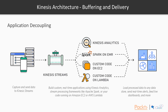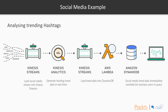Kinesis acts as a scalable buffer until your consumer can catch up — you can produce data as fast as you like and consume at your leisure. Kinesis has a built-in retention feature that can store your data for up to seven days. Typically, you capture event data to Kinesis Streams, then build custom real-time applications using Kinesis Analytics, Spark, EC2 code, or Lambda, and then aggregate and write that processed data downstream.